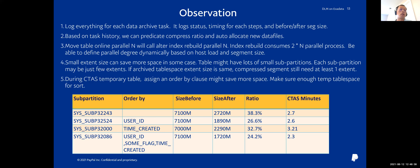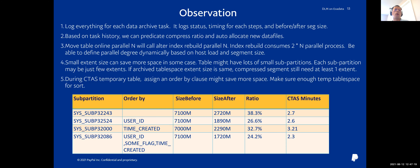During this project, we had some learnings. First, when we do DLM there are multiple steps — for example, online table move or exchange partition. Each sub-step is logged into a table. Based on the task history, if we want to apply the compression policy on one partition, we can know from history the compression ratio — say, the size will reduce by four times. Then when creating a new tablespace, we can check if the target tablespace has enough space, and if not, we can auto-allocate new data files.